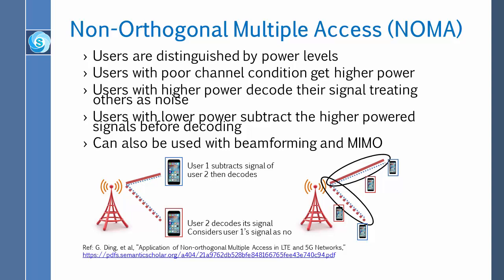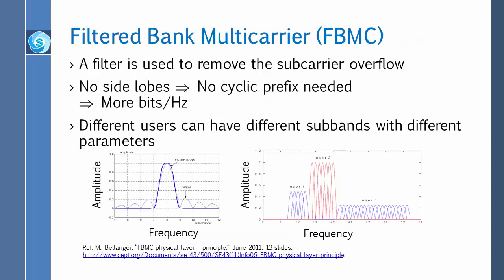Somebody thought: why don't we transmit to two people at different power levels, and then by just the power level, we know who the signal is for. So the idea is that the transmitter sends a red signal with a lower power level and a blue signal with a higher power level — same frequency, same time. The blue one has no problem; it receives its high-power signal and treats everything else as noise, and can detect its signal.